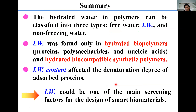In summary: hydrated water in polymers can be categorized as three types — free water, intermediate water, and non-freezing water. Intermediate water was found on hydrated biopolymers (proteins, polysaccharides, nucleic acid) and hydrated biocompatible synthetic polymers. Intermediate water content affects the denaturation degree of adsorbed proteins. We could say intermediate water content could be one of the main screening factors for the design of smart biomaterials.